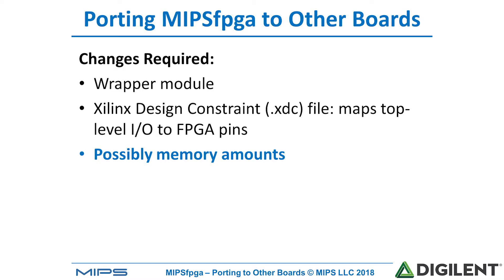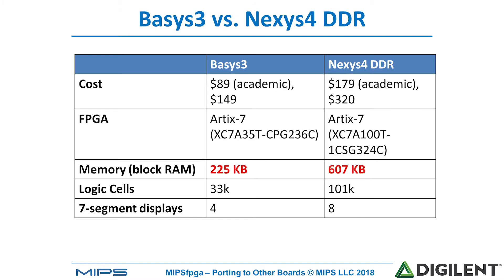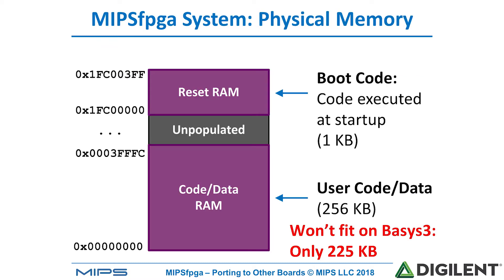We may also need to change the memory amounts on the MIPS FPGA system. We have two types of memory: the boot RAM and the program RAM. If we look at the memory available on the BASIS 3 and Nexus 4 DDR board, the BASIS 3 has 225 kilobytes as opposed to 607 kilobytes on the Nexus 4 DDR board. The MIPS FPGA system has boot code of 1 kilobyte and user code of 256 kilobytes.